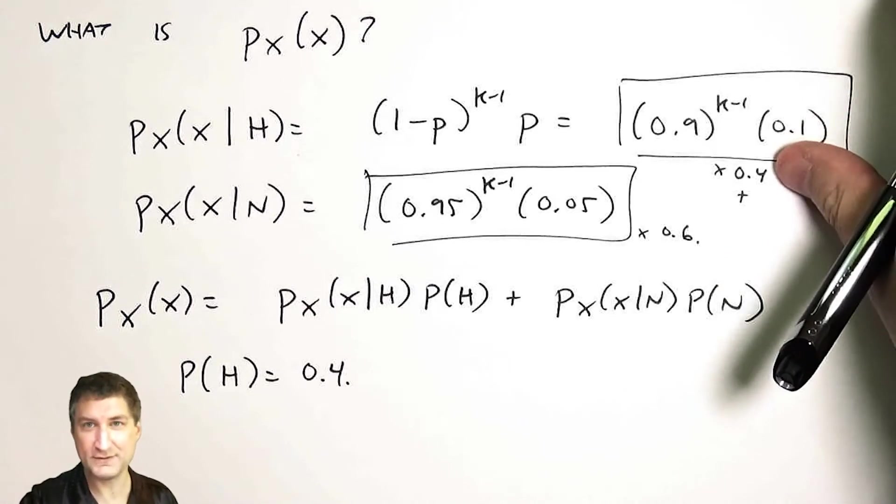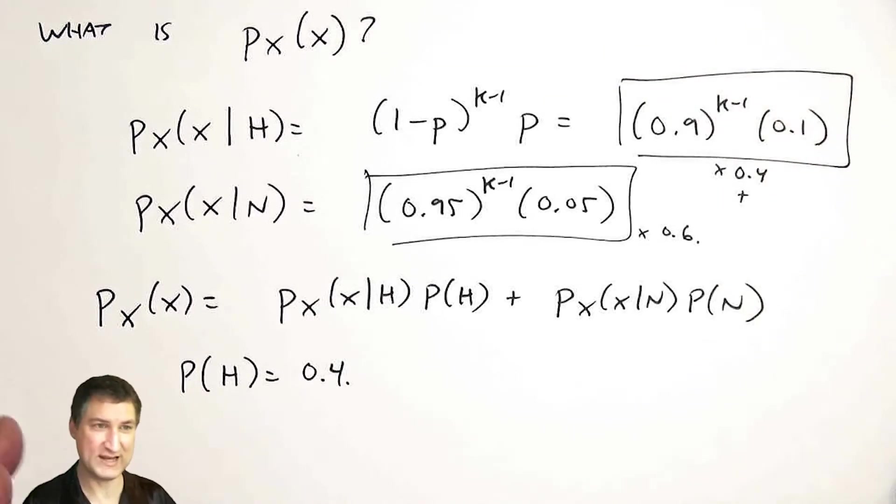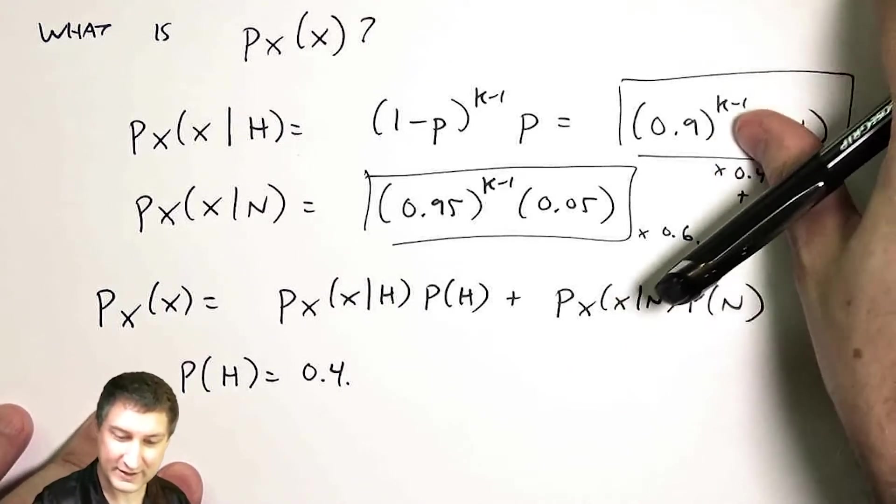And if I wanted to compute the expected value of that, it could be kind of a mess. Because I'd have two geometric random variables added together, which itself is not a geometric random variable. It's going to be some sort of weird Franken variable. And so I'd have to actually compute that manually. It could be really tedious.